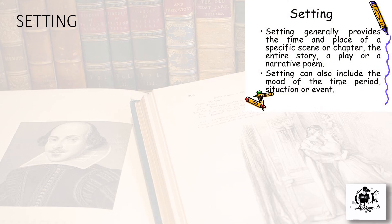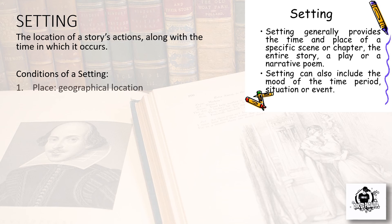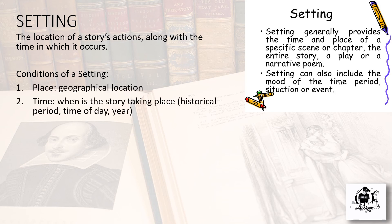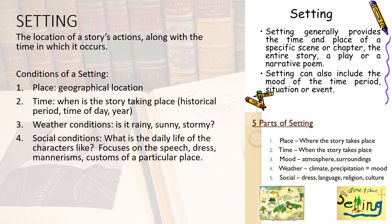Setting is generally the time and place of a specific scene or chapter of a story, a play, or a narrative. Setting can also include the mood of the time period, situation, or event — the location of a story's action along with the time in which it occurred. The five parts of a setting are: place, time, mood, weather, and social condition.